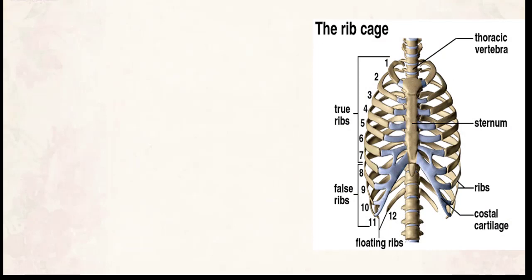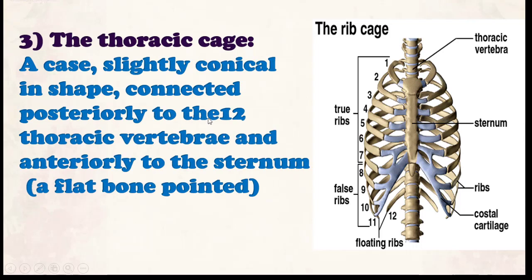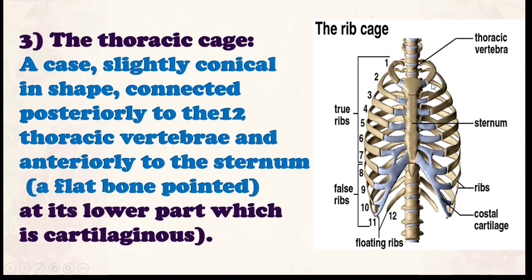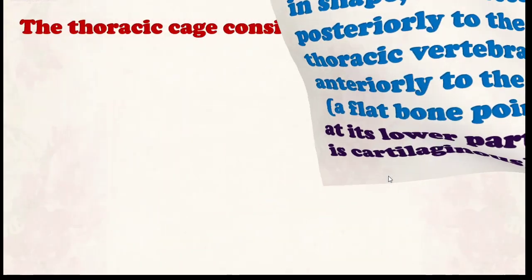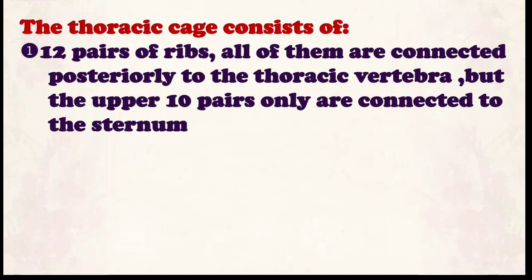Number three from the axial skeleton: the thoracic cage. The thoracic cage is a case slightly conical in shape, connected posteriorly to the 12 thoracic vertebrae from behind and anteriorly with the sternum. The conical shape means it is pointed from the upper end and wide at the base. Its lower part is cartilaginous. The thoracic cage consists of 12 pairs of ribs, all connected posteriorly to the thoracic vertebrae, except the floating ribs.